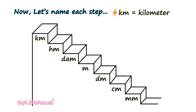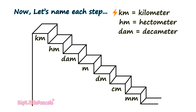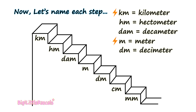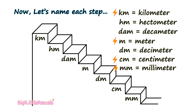Let's name each of the steps. First, Km — short form for kilometer. Second, Hm — short for hectometer. Third, Dam — short for decameter. Fourth, M for meter. Fifth, Dm for decimeter. Sixth, Cm for centimeter. Seven, mm for millimeter.